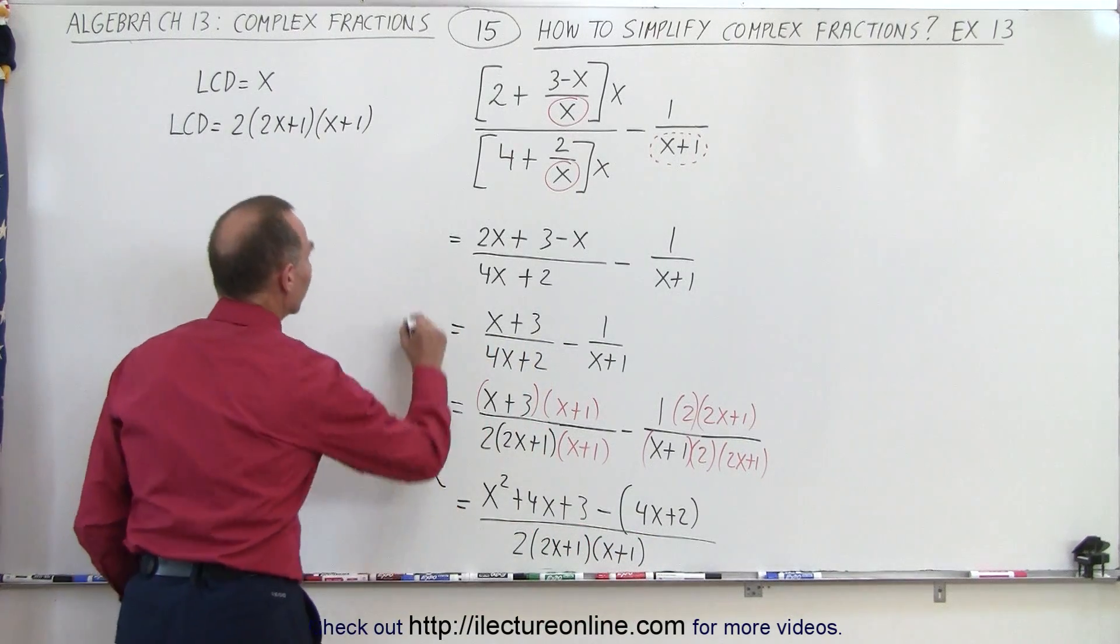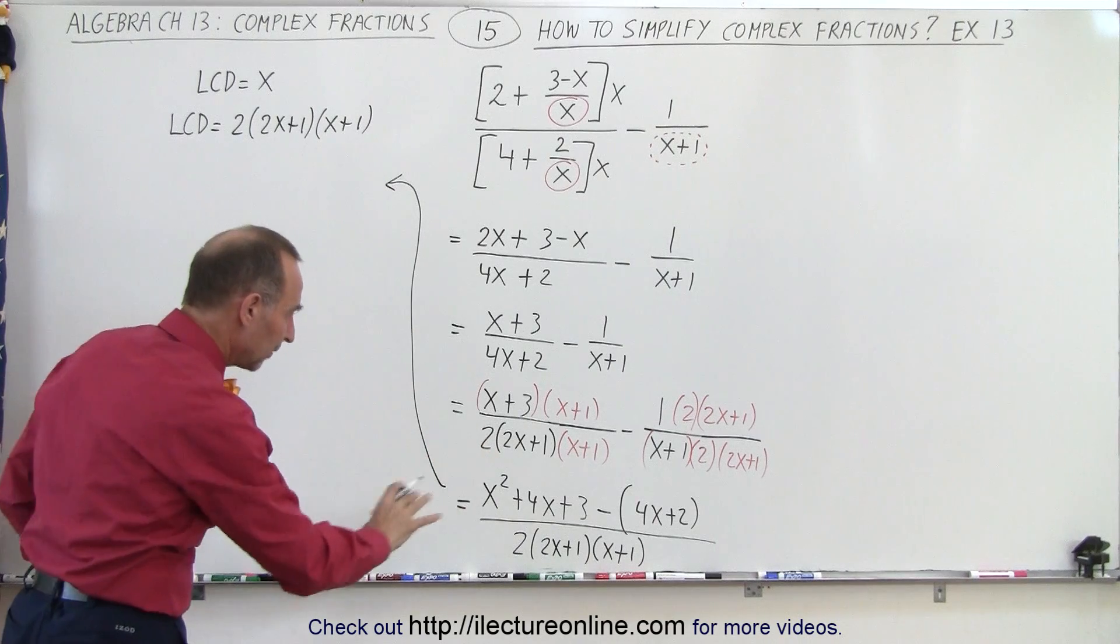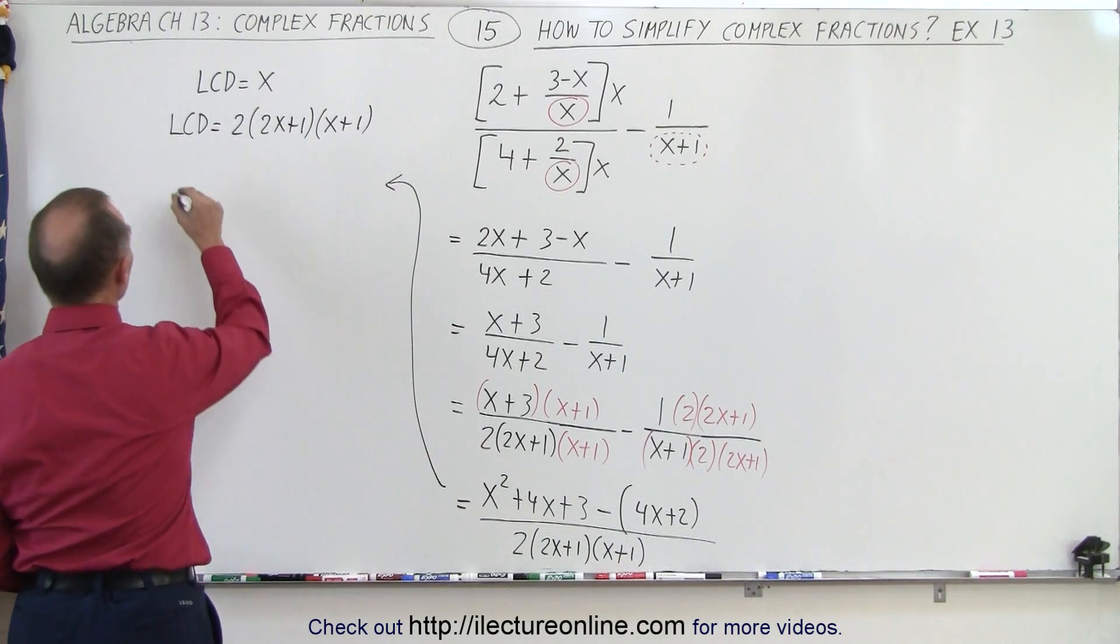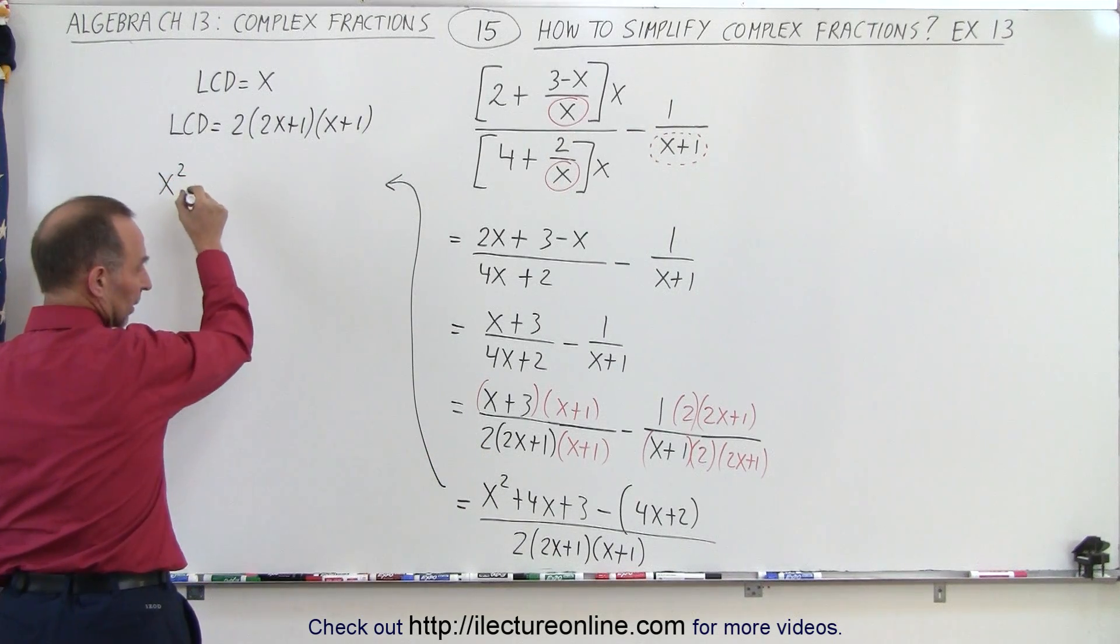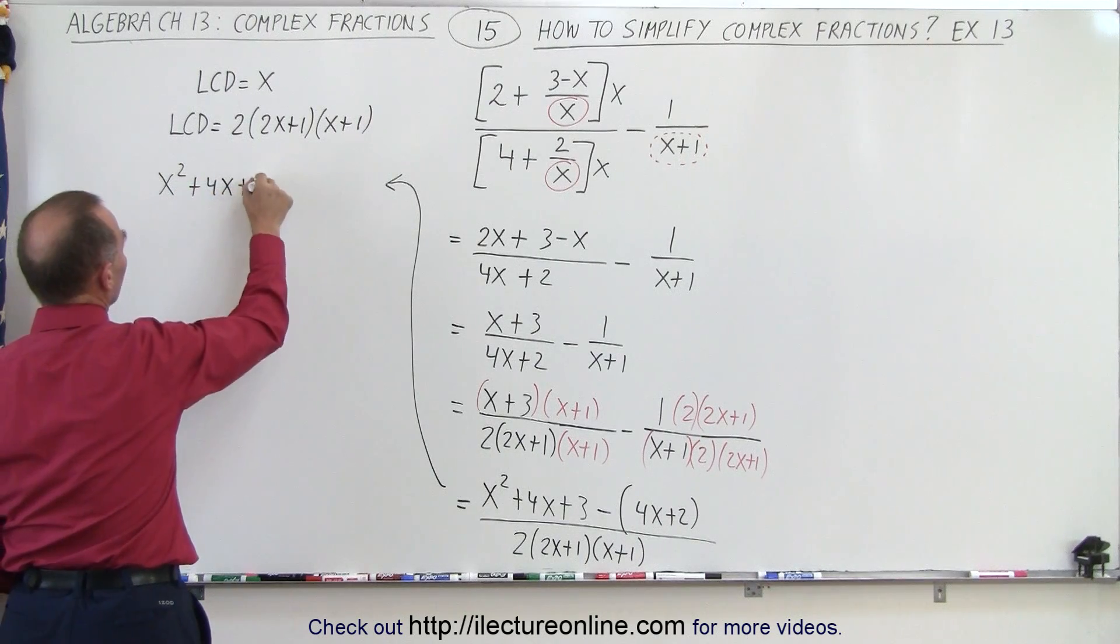The numerator, let's multiply everything out. So we end up with x squared plus 4x plus 3 minus 4x and minus 2.